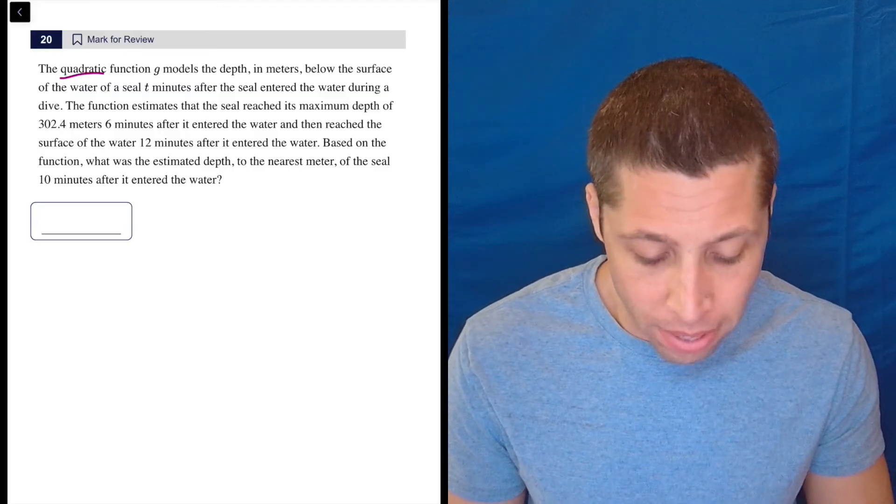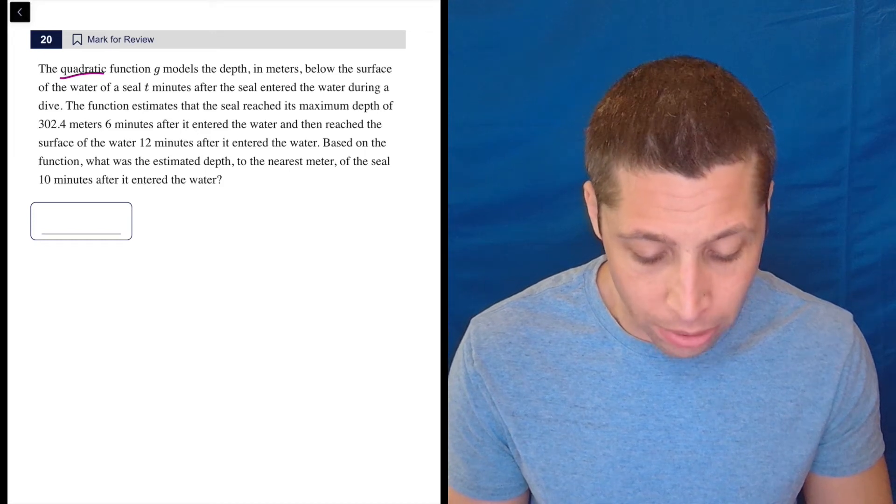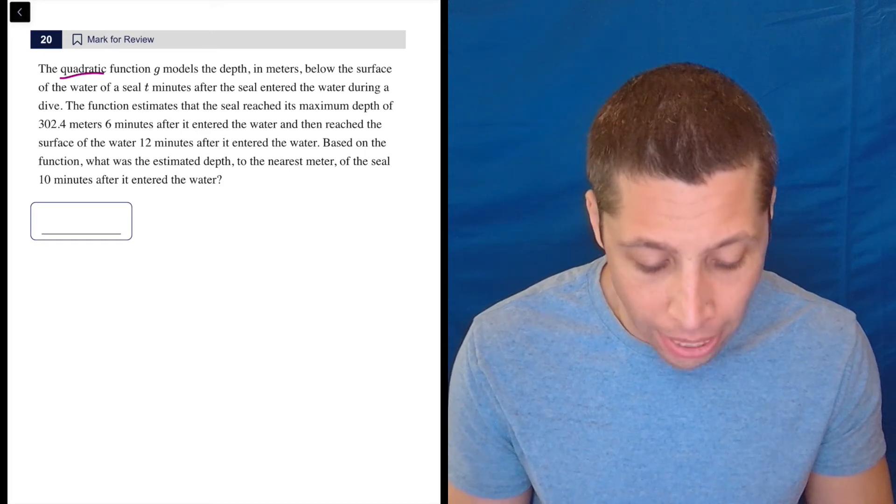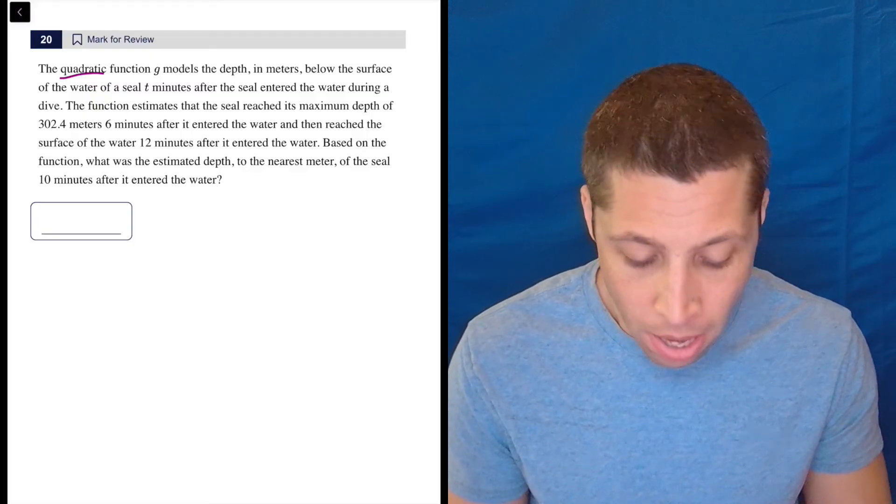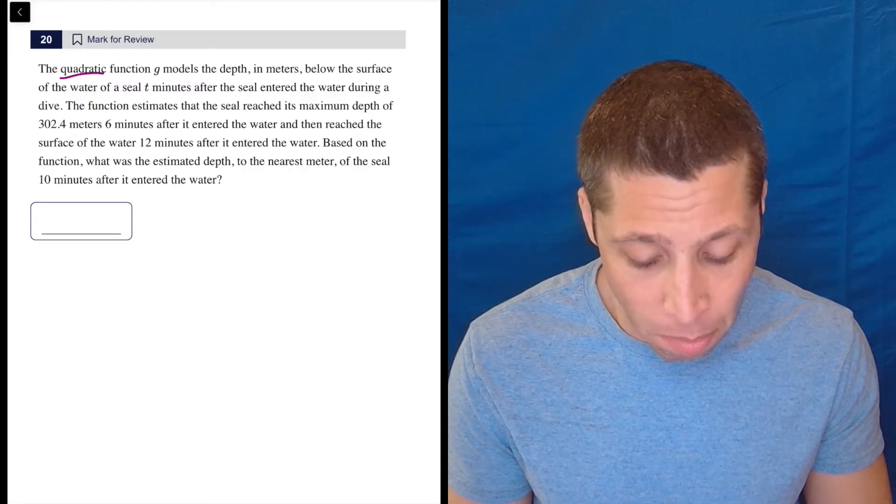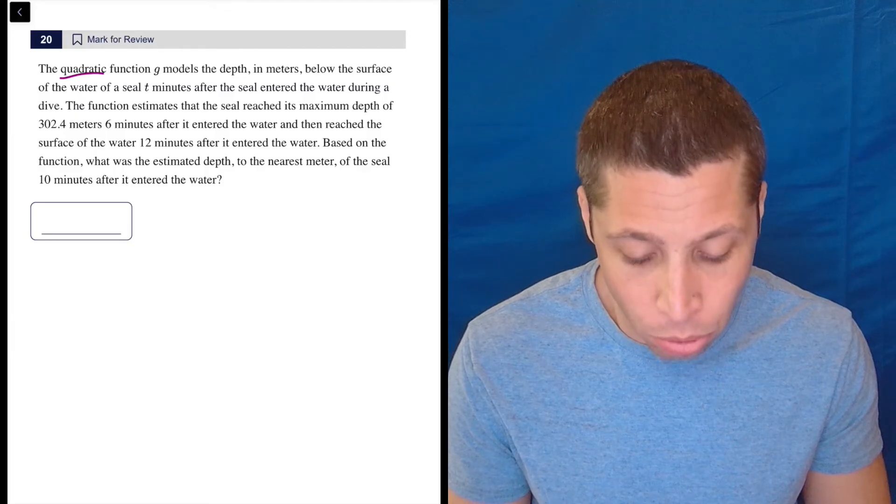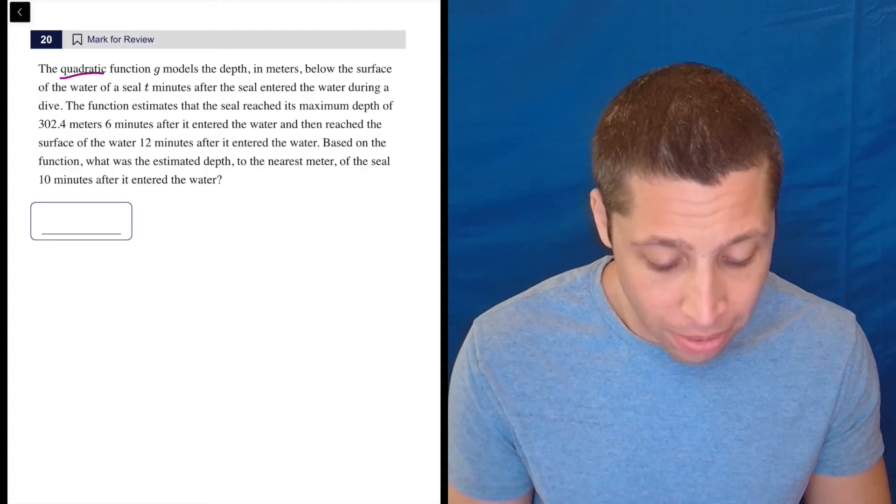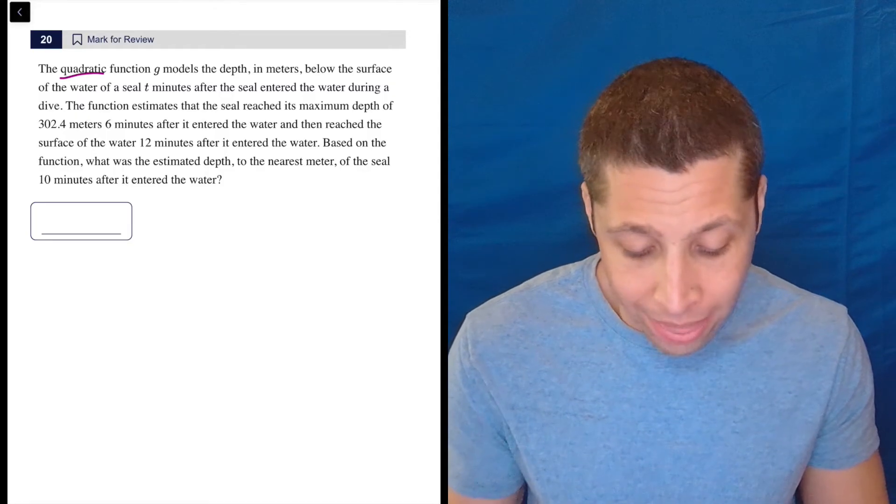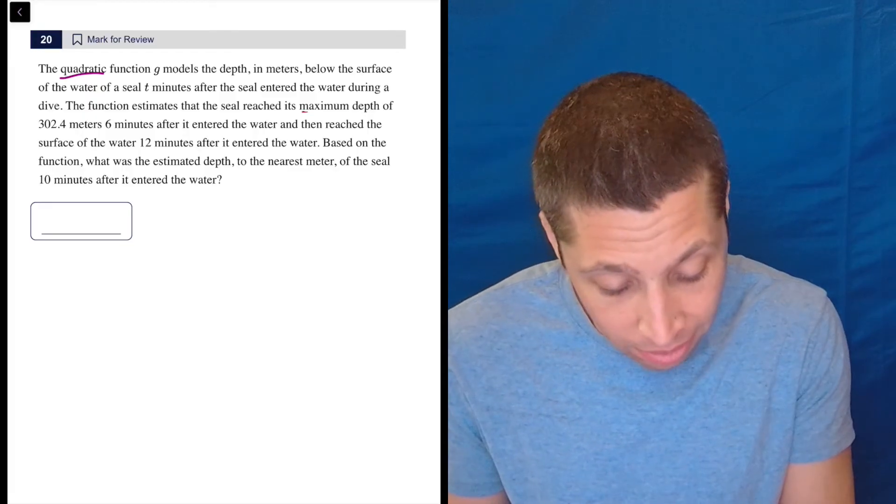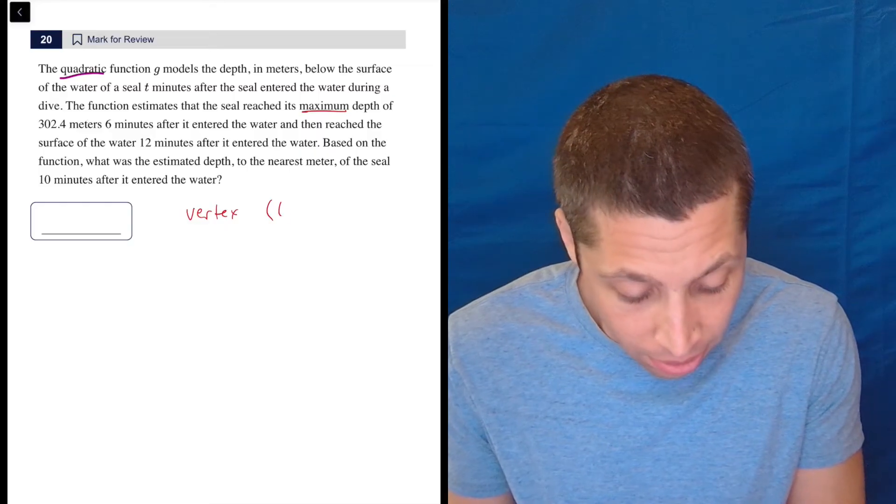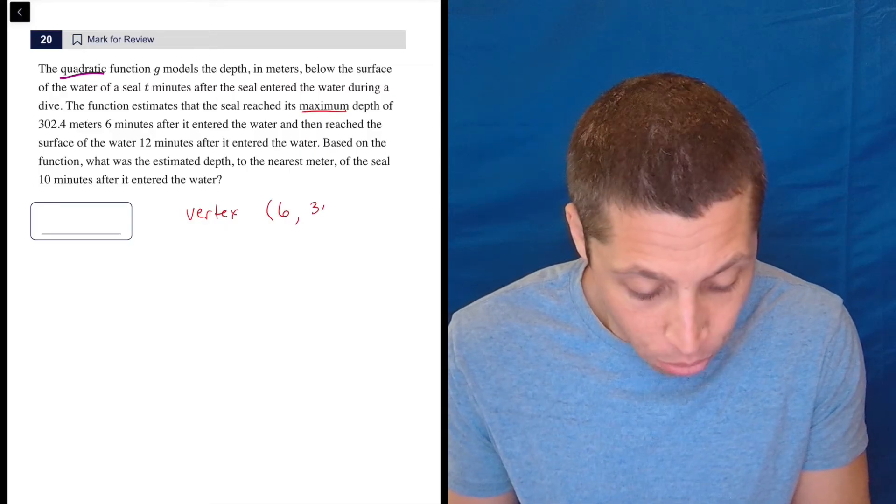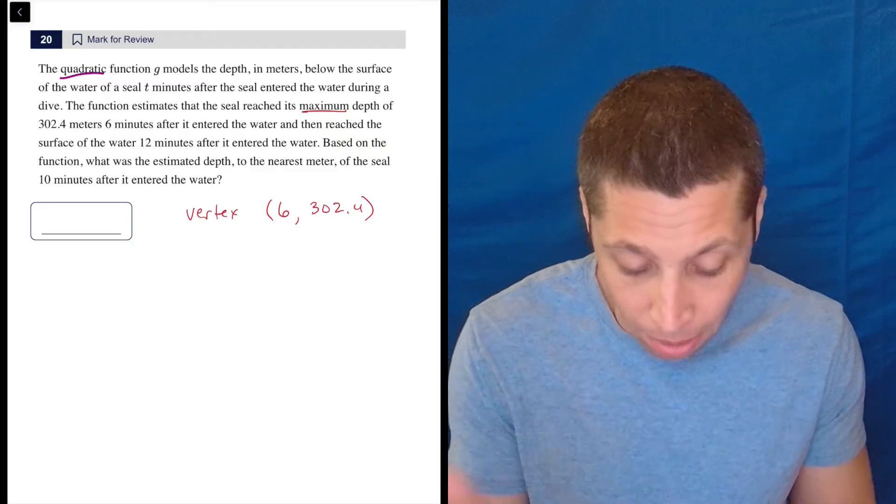The quadratic function G models the depth in meters below the surface of the water of a seal T minutes after the seal entered the water during a dive. So X's and Y's, that's all it's saying. The function estimates that the seal reached its maximum depth of 302.4 meters six minutes after it entered the water. So that's a point. Specifically, since it's maximum, we have to interpret the code. That's giving me the vertex: T is the X, so 6, 302.4.